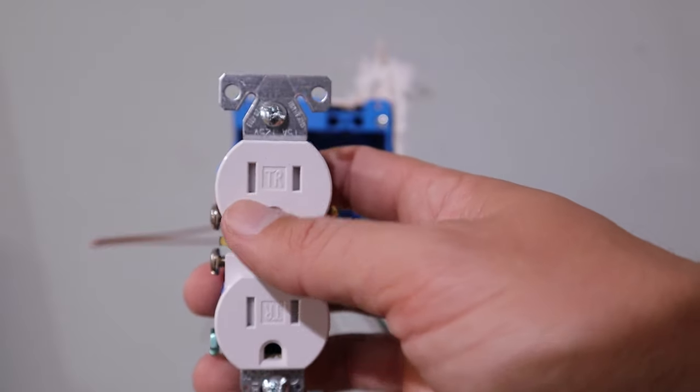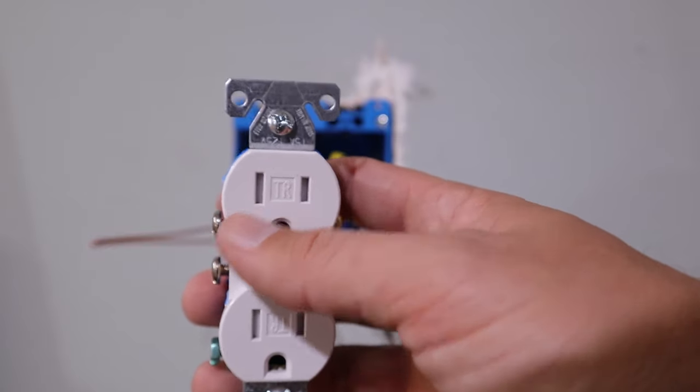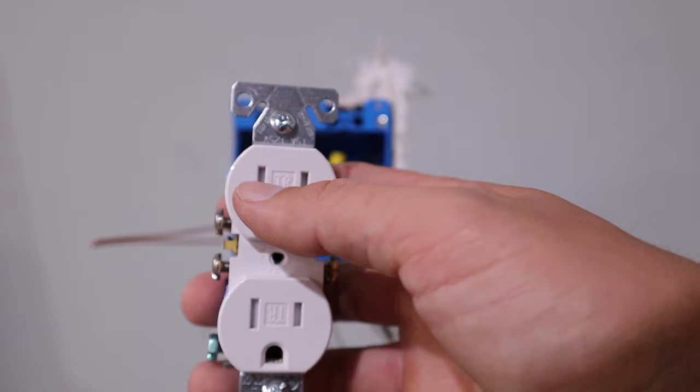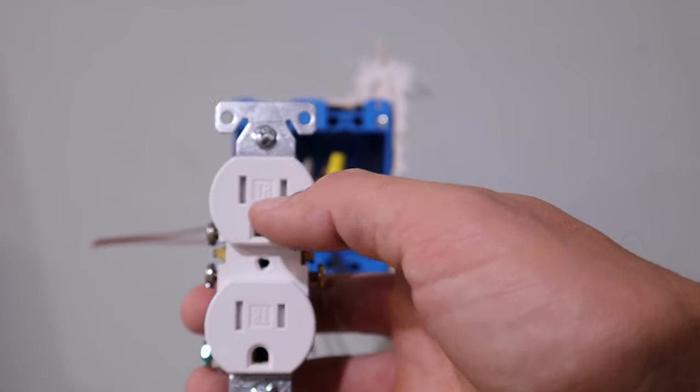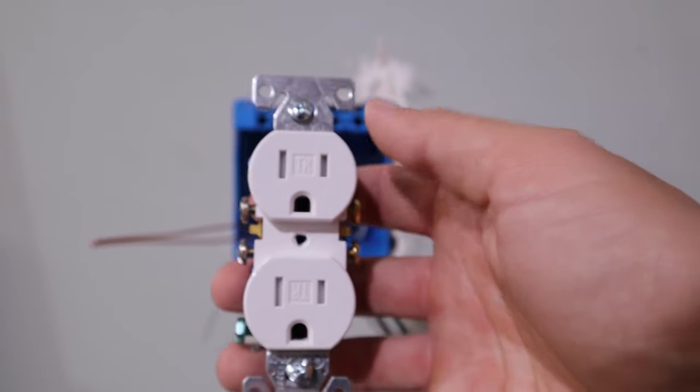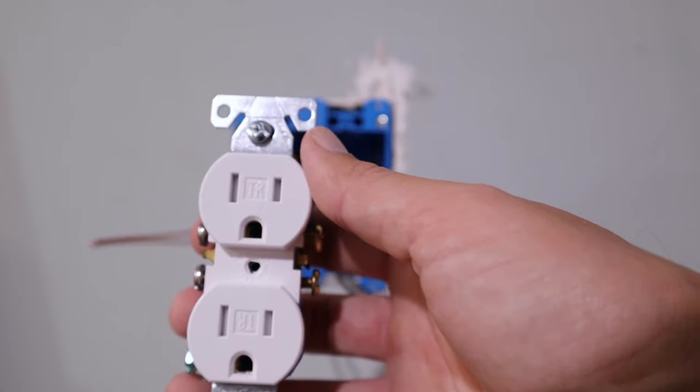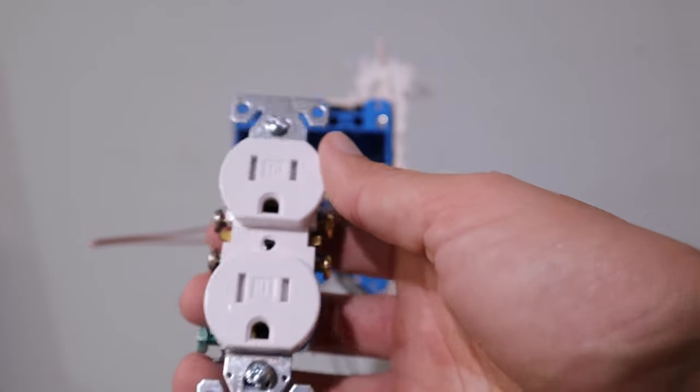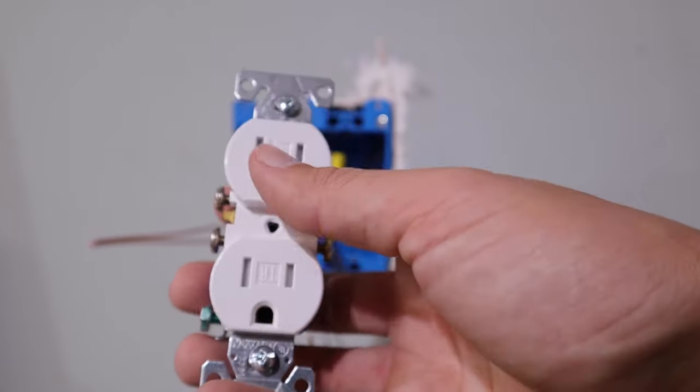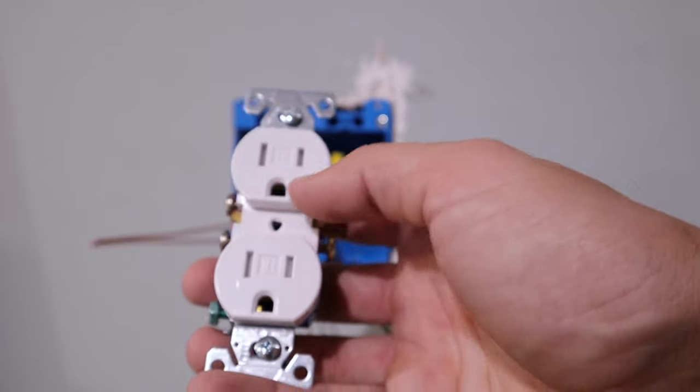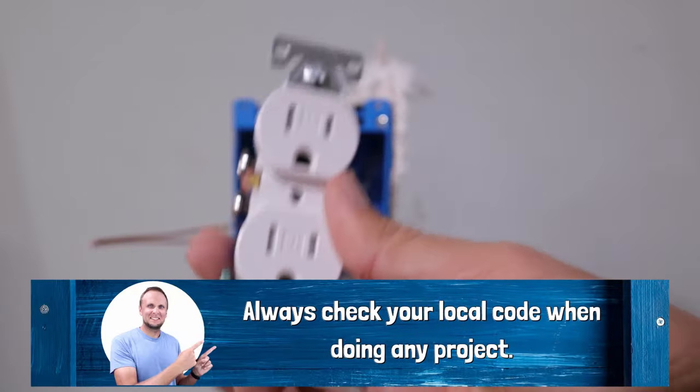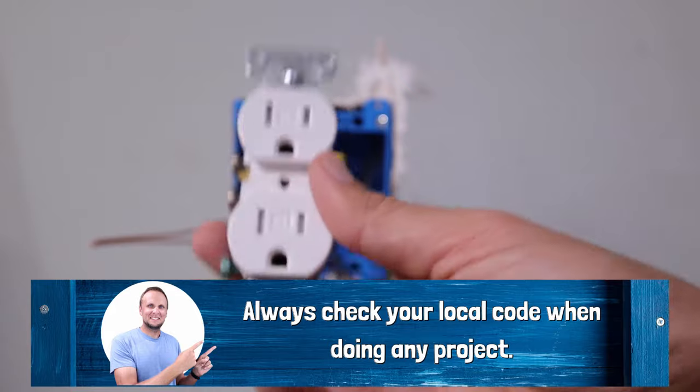But if you don't already know, they have these little plastic pieces inside. I think you can see those that if for instance, a child was to stick something in one or the other one, they wouldn't be able to go all the way through and electrocute themselves. That's kind of the whole point of them. It requires both to be depressed at the same time. So you're probably going to need to be getting one of these tamper resistant outlets when you go looking for outlets.